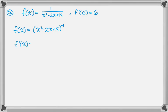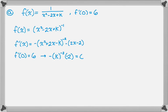And now I'm going to chain rule this thing. So f prime of x is, bring the exponent down, and then subtract one from the exponent, and then multiply by the derivative of the inner function, so times two x minus two. And now I'm going to use the fact that f prime of zero equals six. So that means that plugging in zero, I actually just get negative, everything with an x cancels, so we just get negative k to the negative second times negative two, and that has to equal six.